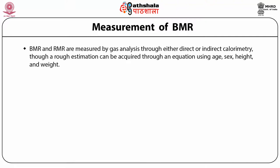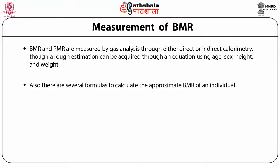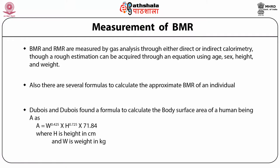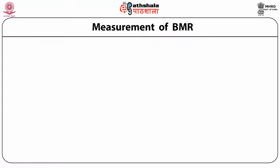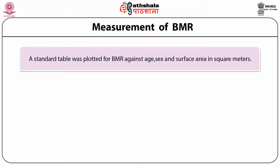Measurements of basal metabolic rate are obtained by gas analysis through either direct or indirect calorimetry, though a rough estimation can be acquired through an equation using age, sex, height and weight. Du Bois and Du Bois found a formula to calculate the body surface area of a human being, A, where H is the height in centimeters and W is the weight in kilograms. A standard table was plotted for BMR against age, sex and surface area in square meters.